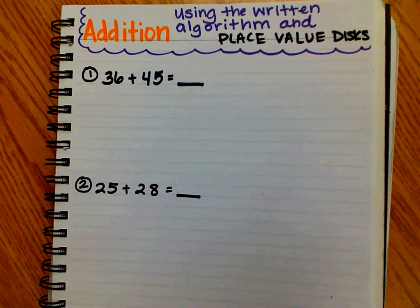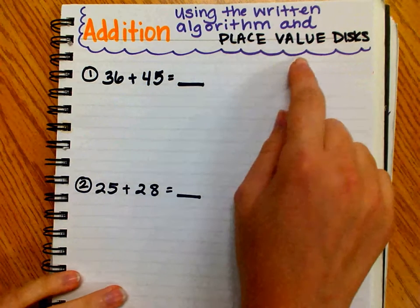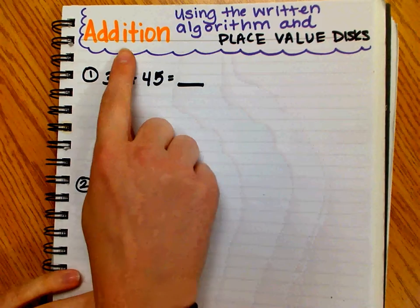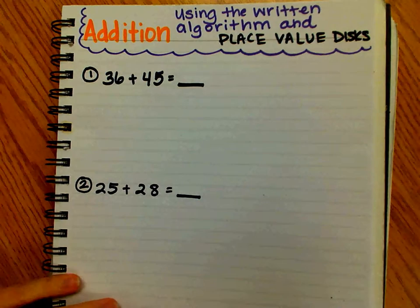Students have been working with place value disks for quite a while now, and those are just circular disks that are either valued at 100, 10, or 1. We are going to use place value disks in addition to the written algorithm to help us solve some addition problems.